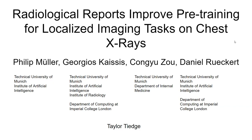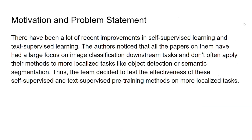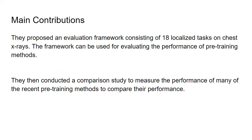The motivation for this paper: the team noticed there have been a lot of recent improvements in self-supervised learning and text-supervised learning. The authors observed that many papers on these methods had a large focus on image classification downstream tasks and didn't often apply their methods to more localized tasks like object detection or semantic segmentation. Due to this, the team decided to test the effectiveness of these self-supervised and text-supervised pre-training methods on more localized tasks. The main contributions are: they proposed an evaluation framework consisting of 18 localized tasks on chest x-rays, and they applied this framework to several different pre-training methods to compare the performance of current state-of-the-art methods.